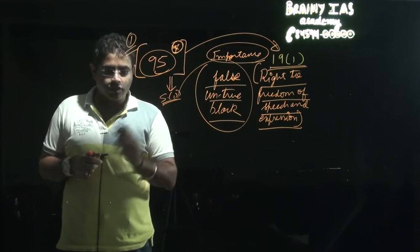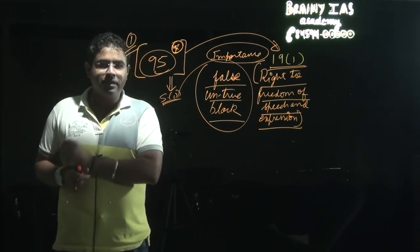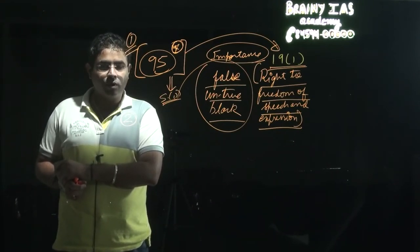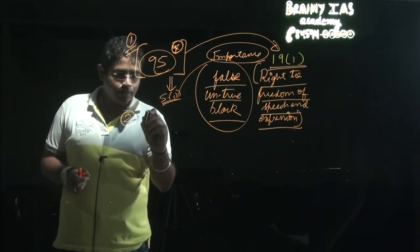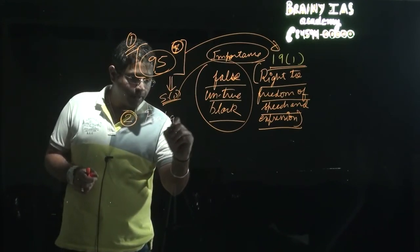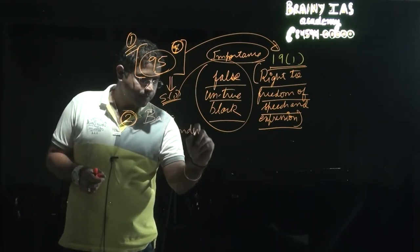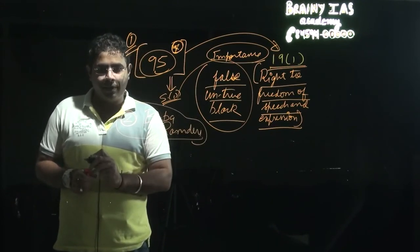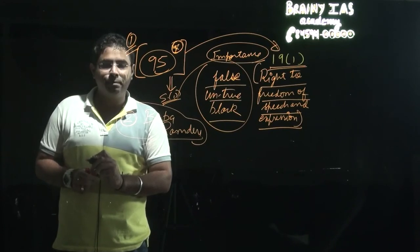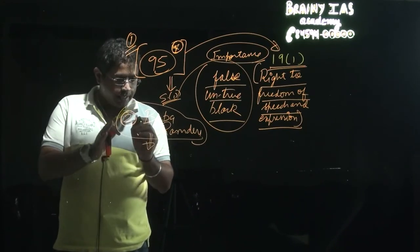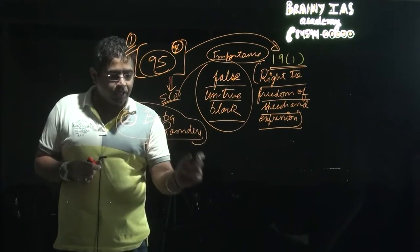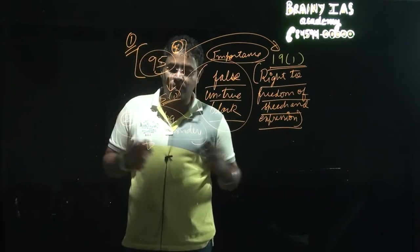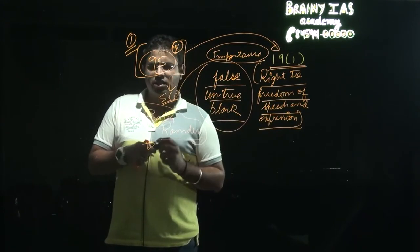The second thing discussed by Gautam Bhatia is about another book called 'From Godman to Tycoon', related to Baba Ramdev. An injunction has been imposed by the judiciary which stopped the release of this book without going into the nitty-gritties of what the book wants to say or what the book is all about. Gautam Bhatia is really concerned about our institutions like the government, executive, and judiciary.